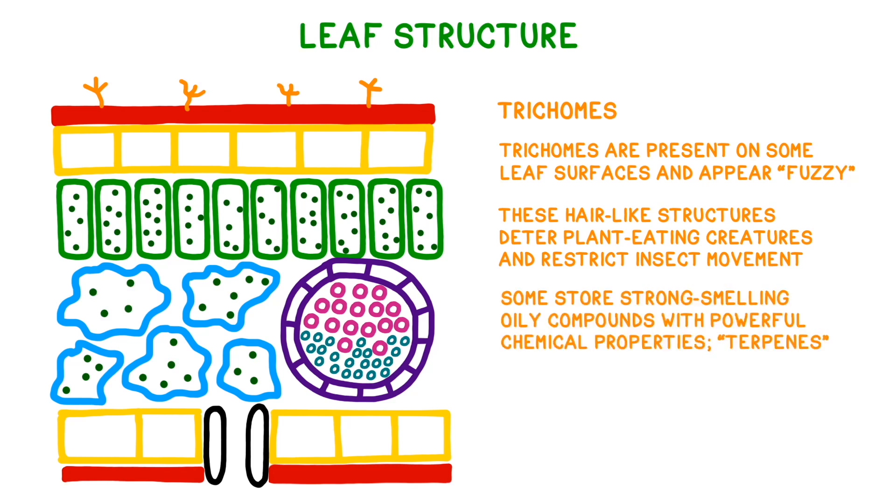Some of them also store oily compounds with powerful chemical properties known as terpenes. Lavender, pine, citrus fruits, and tetrahydrocannabinol all contain terpenes, which is what gives each its distinctive smell.